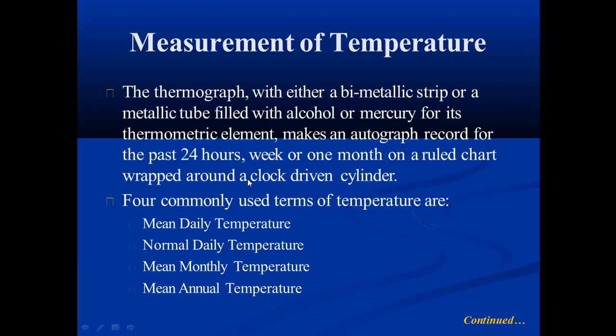The thermograph, with either a bimetallic strip or a metallic tube filled with alcohol or mercury as its thermometric element, makes an autographic record for the past 24 hours, week, or one month on a ruled chart wrapped around a clock-driven cylinder. The record moves over the chart according to the temperature, providing a continuous trace.